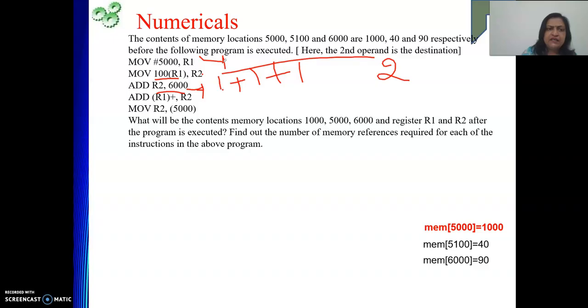So here see, nothing is given. So we will be incrementing R1 by 1. And what is R1's content? Whatever it is. From that location, the value will be taken and given to R2. So 1 plus 1. Two memory references will be required.